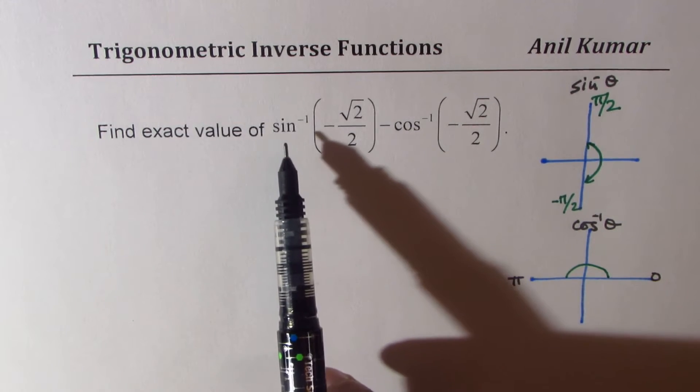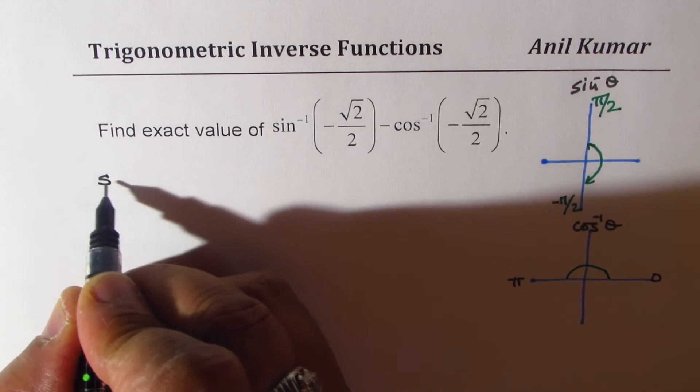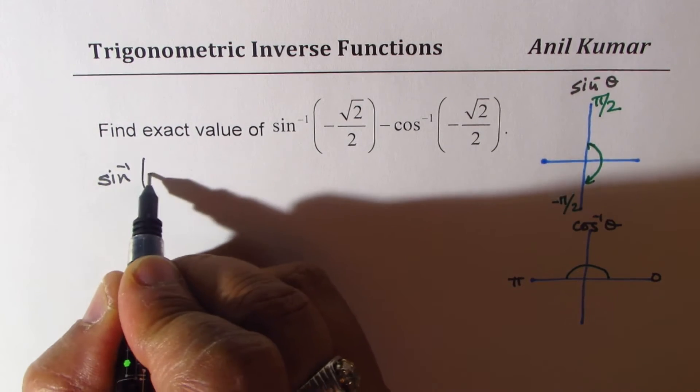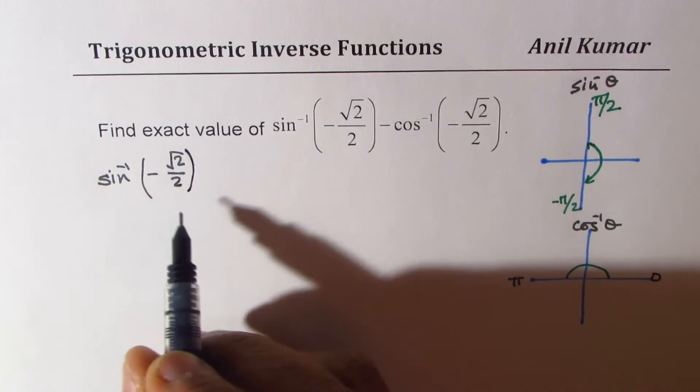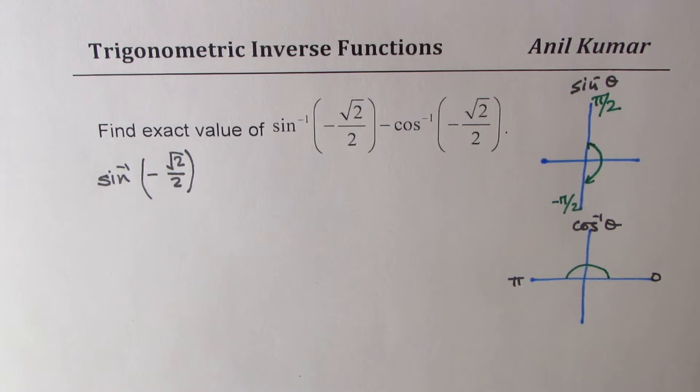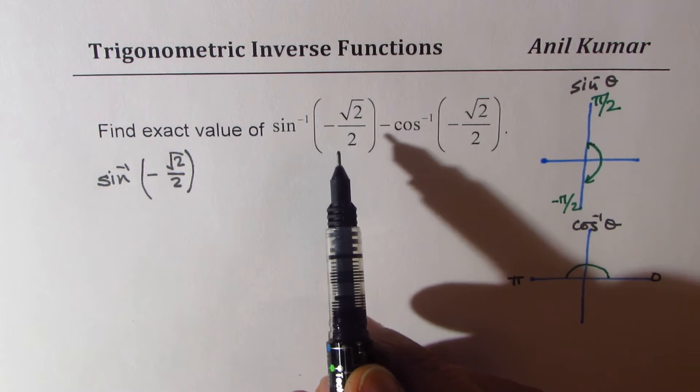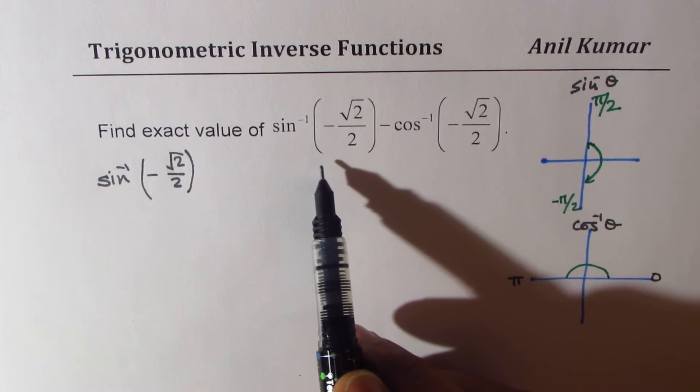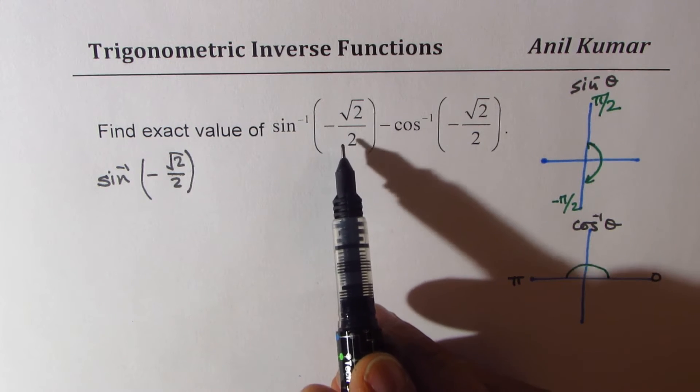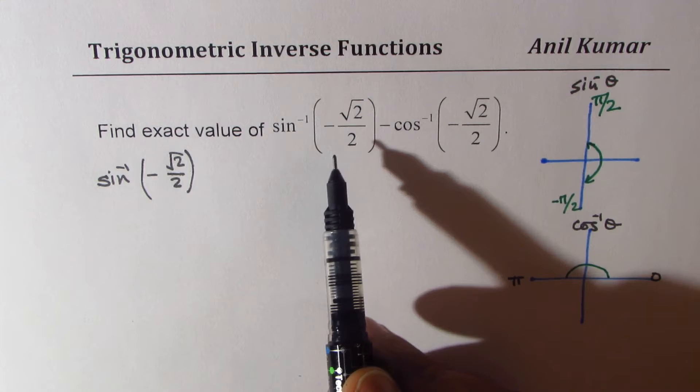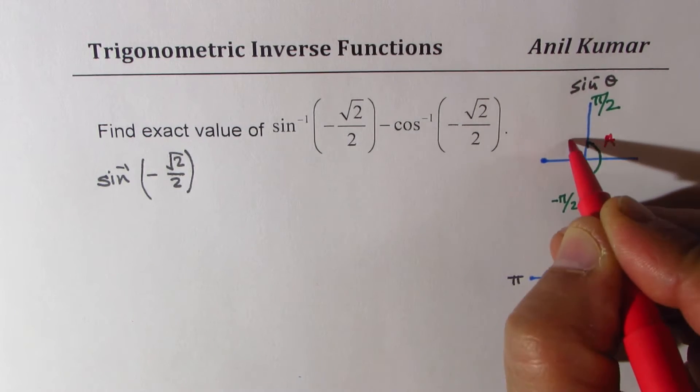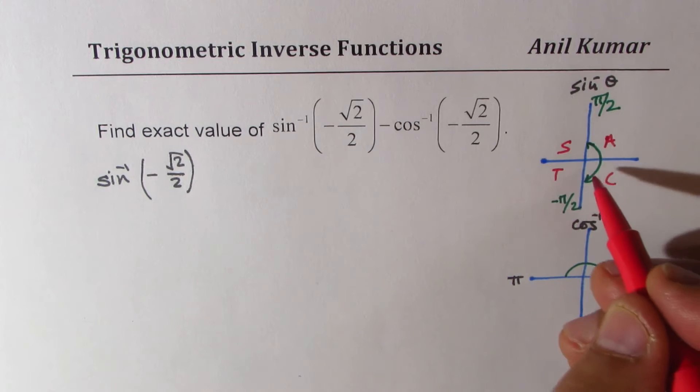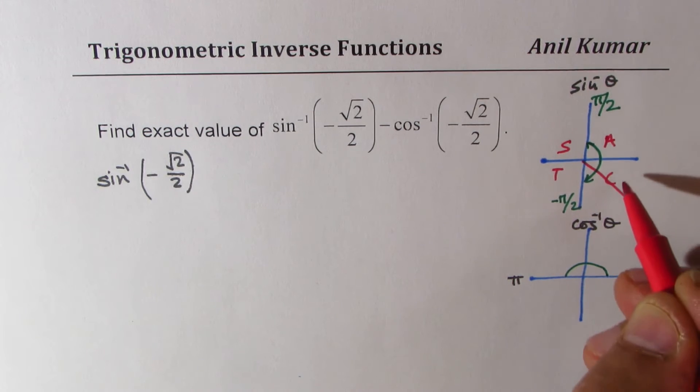So when I say sine inverse of minus square root 2 over 2, what we are trying to figure out here is in which position is that arm, where are we located. So sine, as far as you know, is actually positive. We know the rule: all are positive here, sine, tan, and cos. So the negative means we are talking about being in coordinate 4.